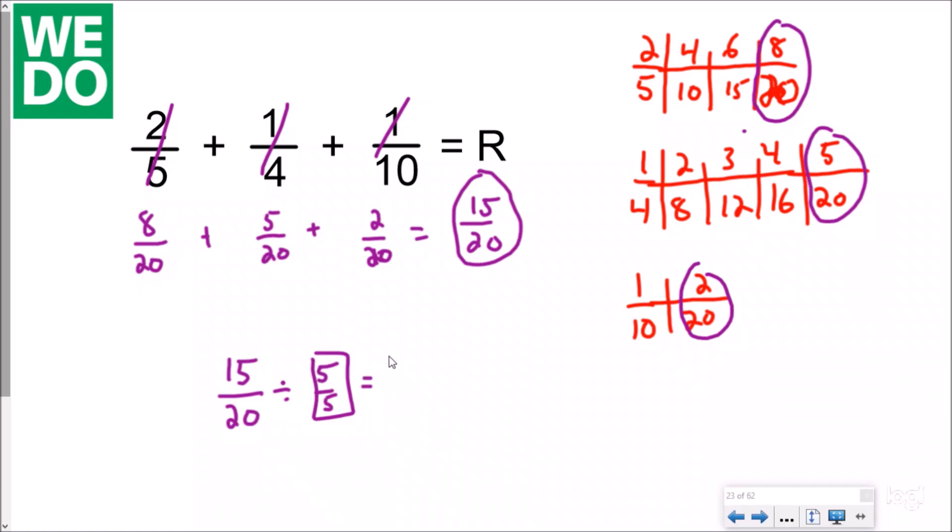So I'm going to use my identity property of division to divide this with a five over five, which is really equivalent to one whole. And my answer is going to be, my simplified answer is going to be three-fourths.